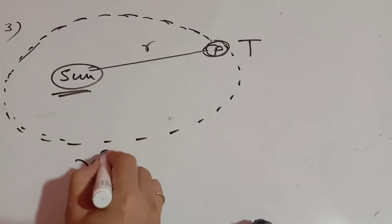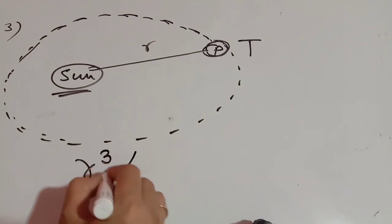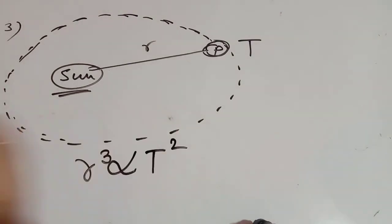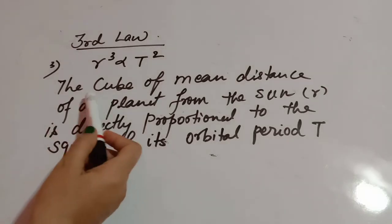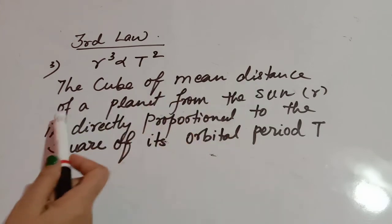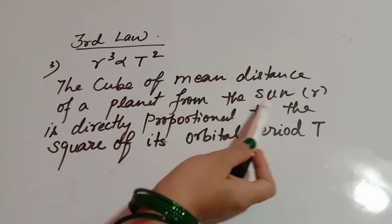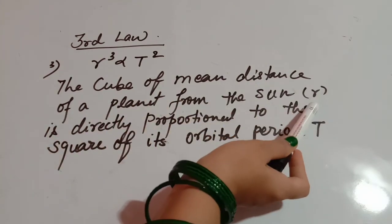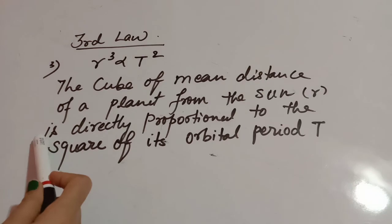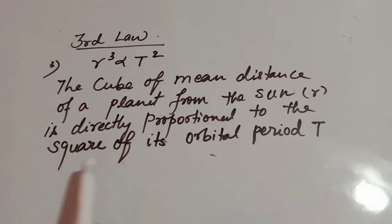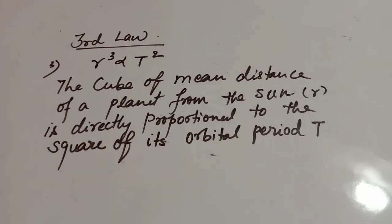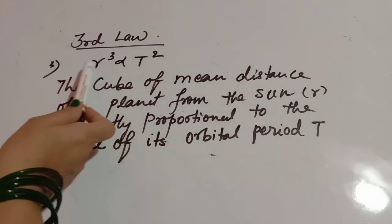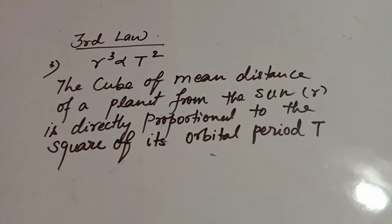According to Kepler's third law, R cubed is directly proportional to T squared. That is, the cube of the mean distance of a planet from the Sun (R) is directly proportional to the square of its orbital period (T). R³ ∝ T².